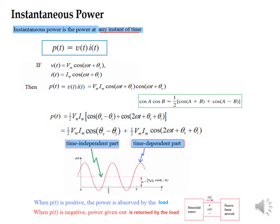When the power is positive — above the zero line — the sinusoidal source is supplying power to the load. When the power is negative, the load is supplying power back to the source. For example, in the case of an inductor or capacitor, power is negative half of the time, meaning when they are charged they supply power back to the source.